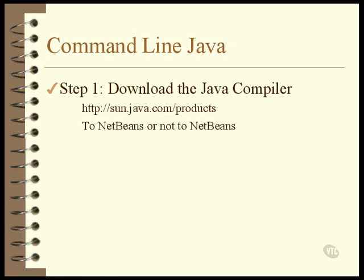You can pick one and try it, then uninstall it, then try another. There's no problem loading several different versions of the command line compiler onto the same machine — they don't interfere with each other in any way. Once you have downloaded the file from Sun, you'll need to execute it, and it will guide you through the installation process, which is really nothing more than selecting some options and an installation directory. The default selections are fine.